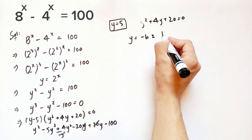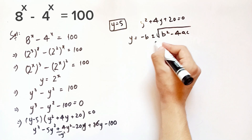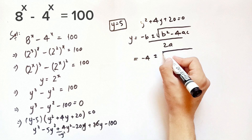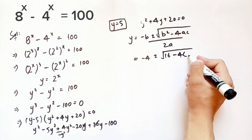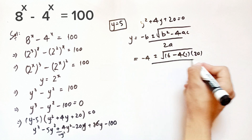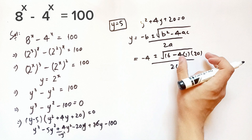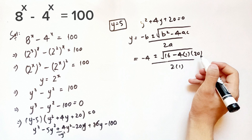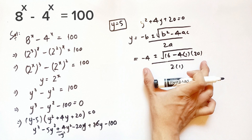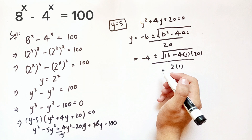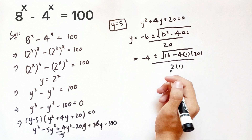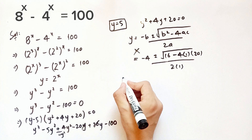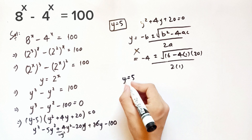Putting in the values: negative 4 plus or minus the square root of 16 minus 4 times 1 times 20, over 2 times 1. The discriminant is 16 minus 80, which is negative, so the solutions of this quadratic are imaginary numbers. Since we need only real values of x, these two solutions are discarded, and we have only one real solution: y equals 5. Replacing y by 2 to the x gives 2 to the x equals 5.